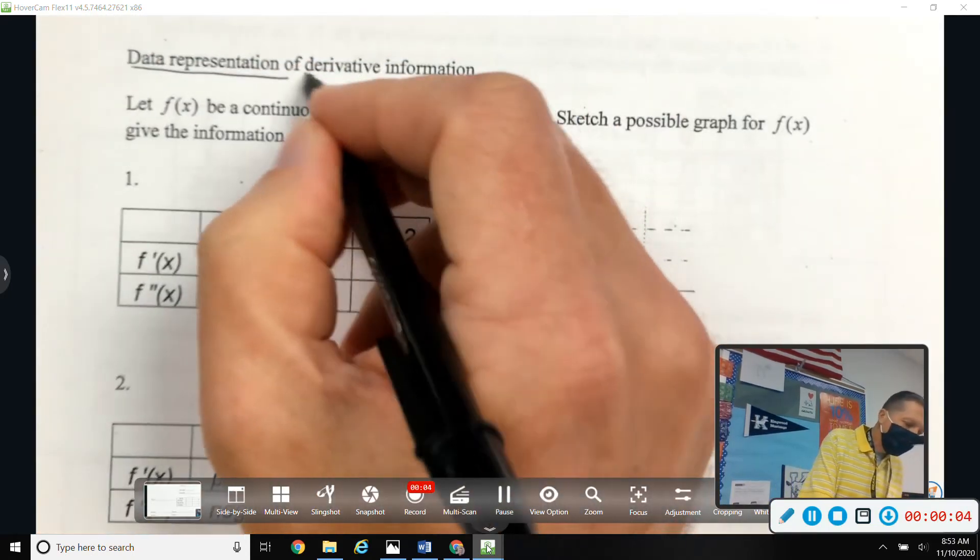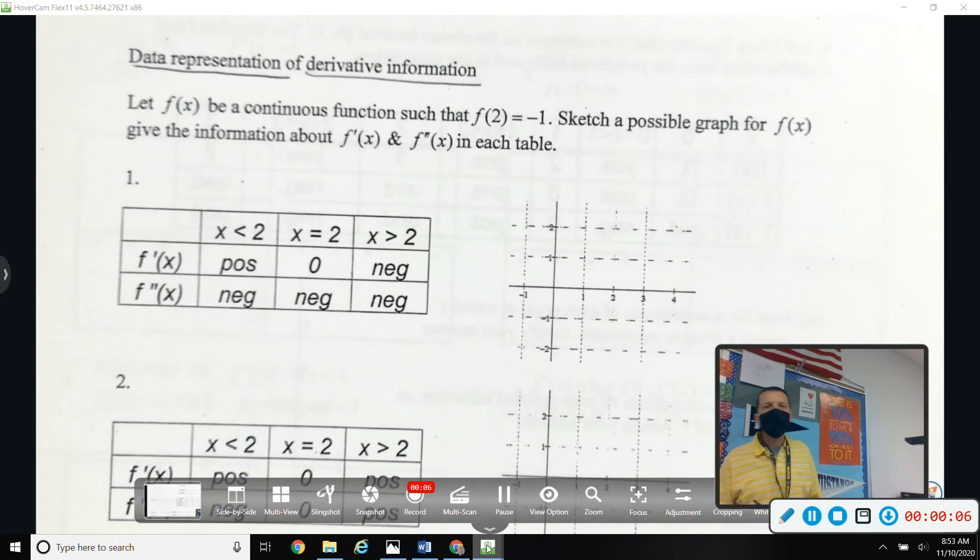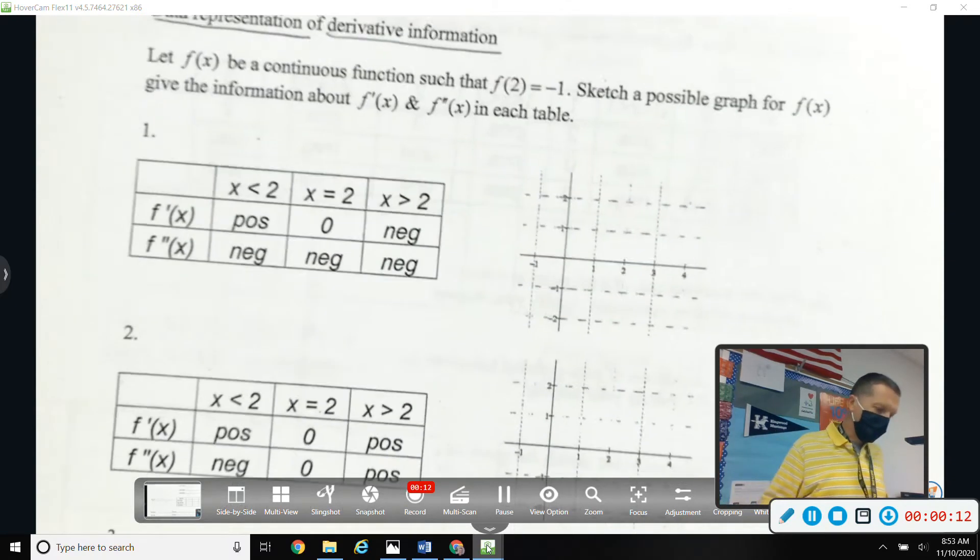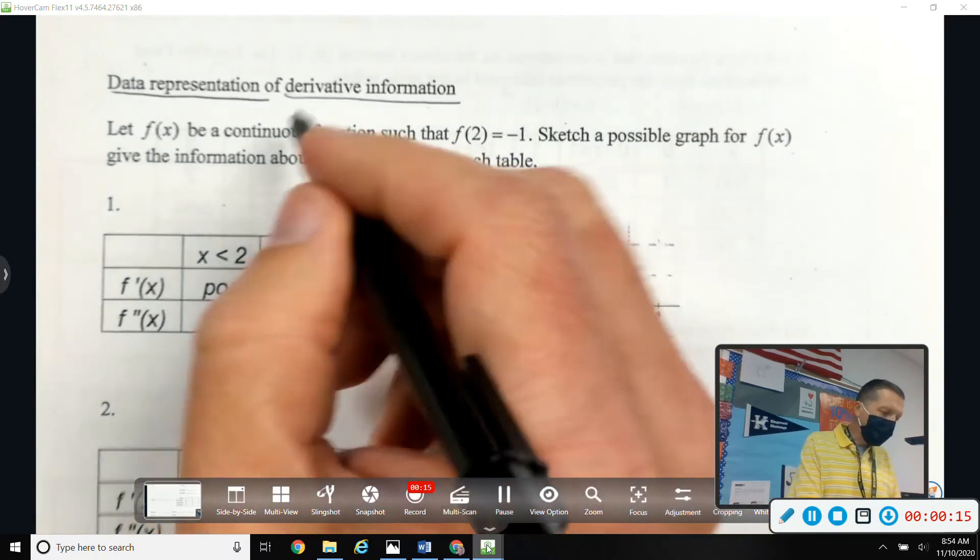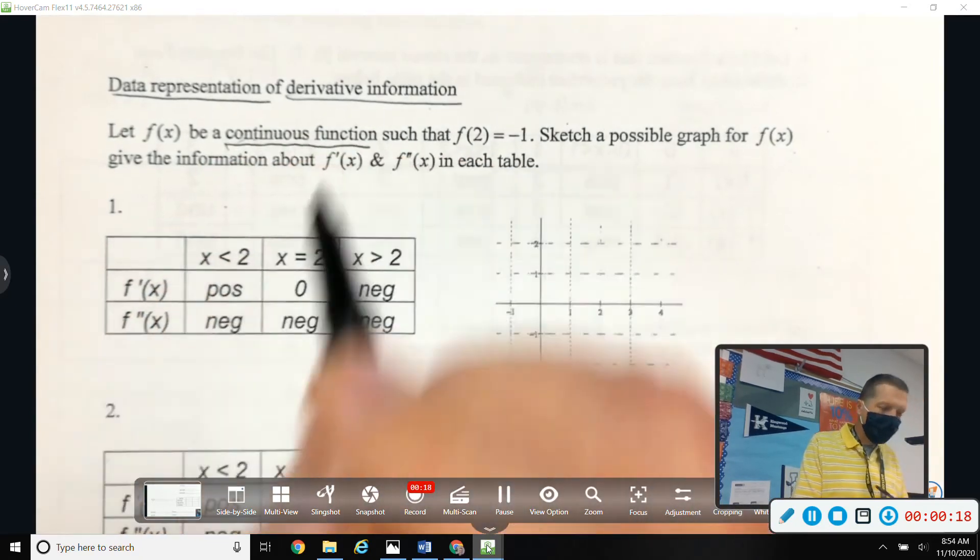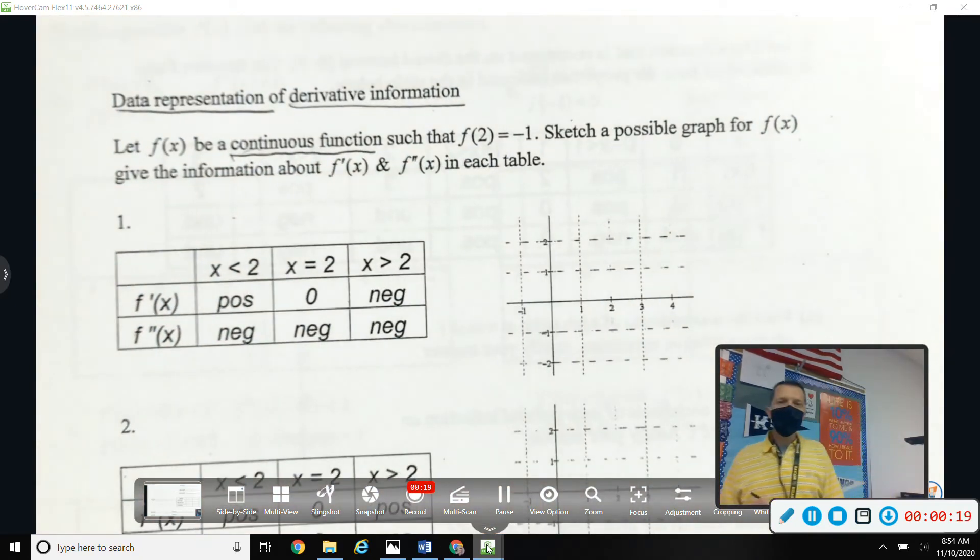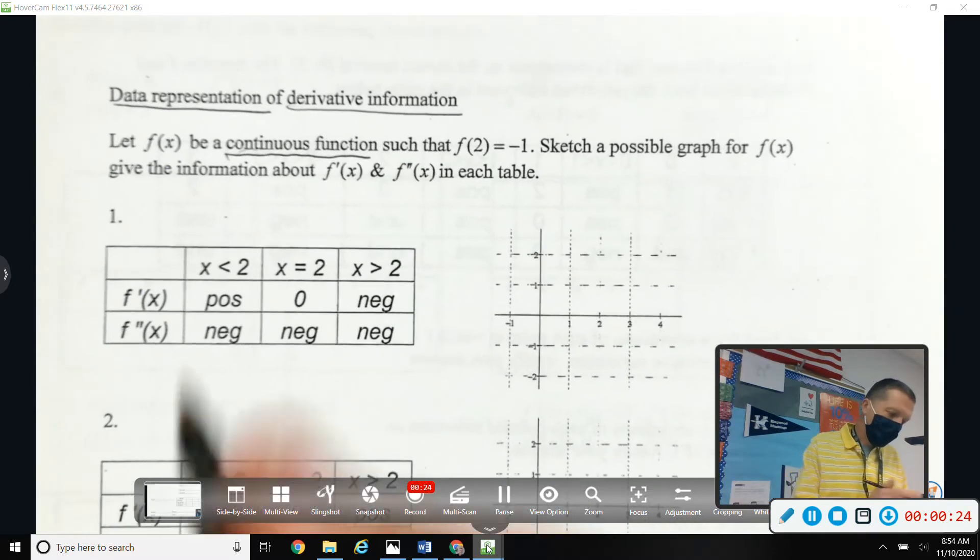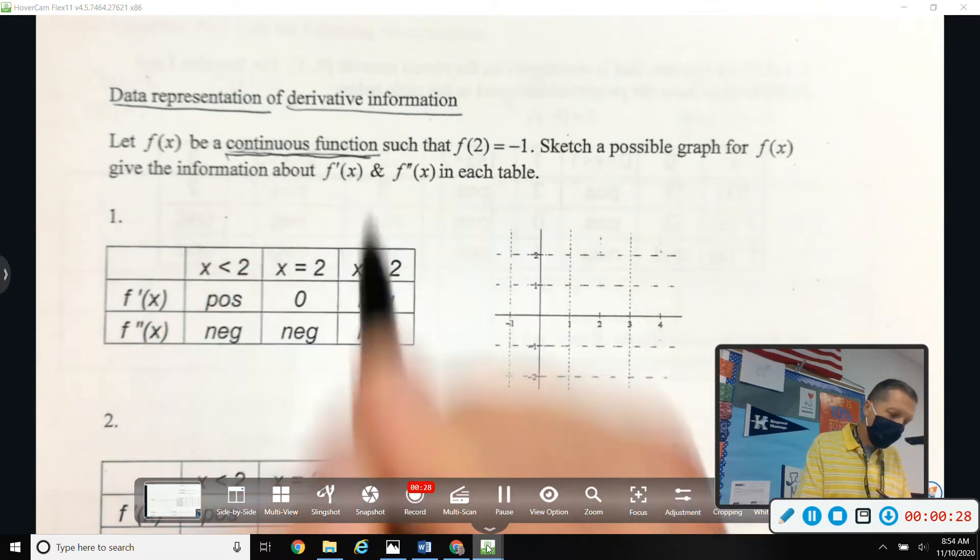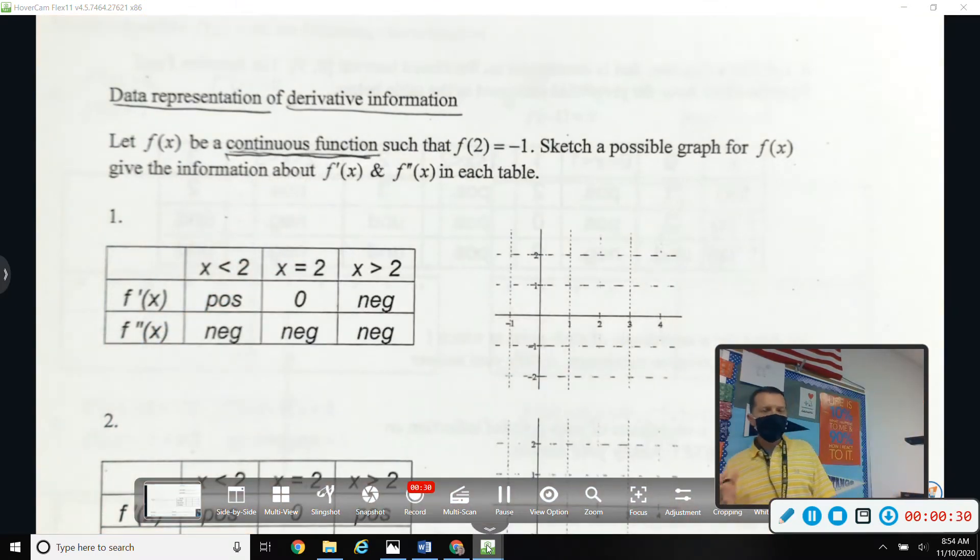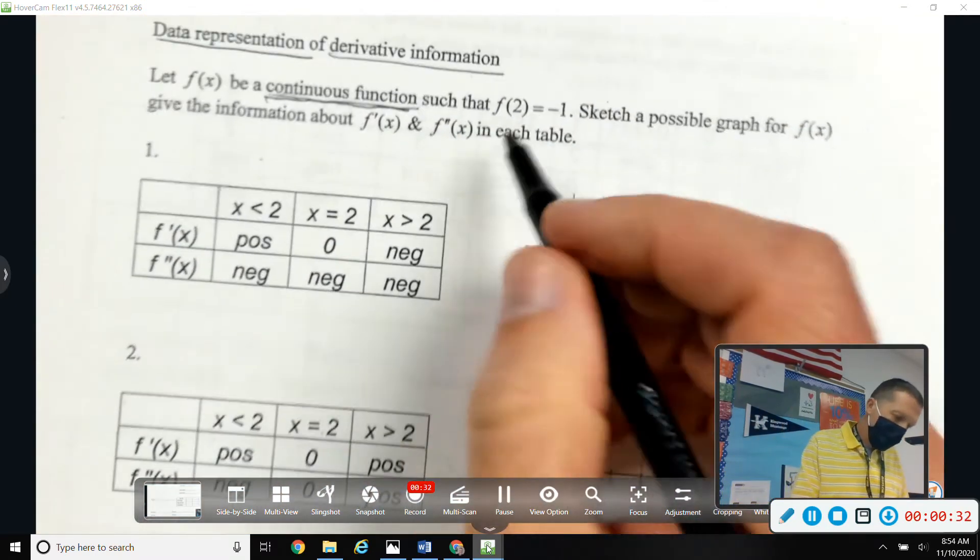Data representation of derivative information - that sounds really fancy, but you've done this stuff before. Make sure we read the directions. Let f be a continuous function, so nothing goofy, no holes, no jumps, no asymptotes. But it doesn't necessarily say it has a derivative everywhere, so we could have cusps involved.